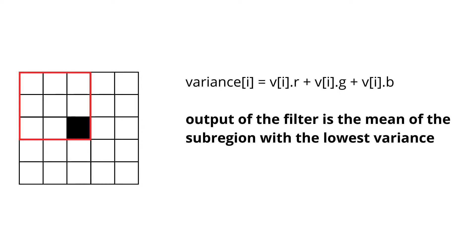As we will be working with color images, the final variance will be calculated as the sum of values of all channels. The output value of the Kuwahara filter will be the mean of the subregion with the lowest variance.